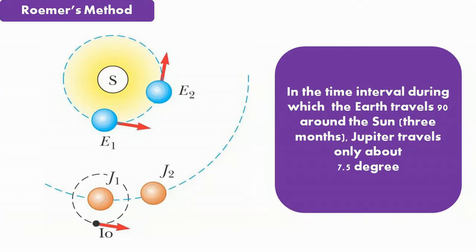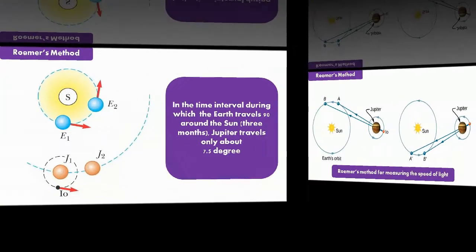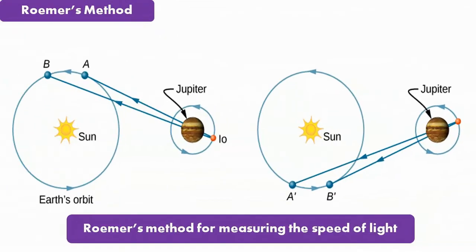He found that the time periods were longer than average when the Earth was receding from Jupiter and shorter than average when the Earth was approaching Jupiter. Roemer attributed this variation in the period to the distance between the Earth and Jupiter changing from one observation to the next.